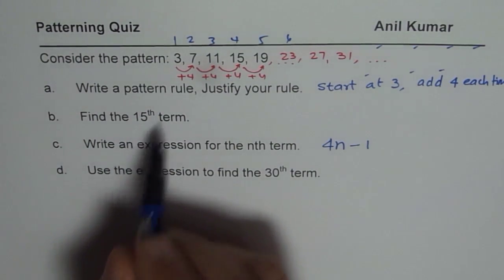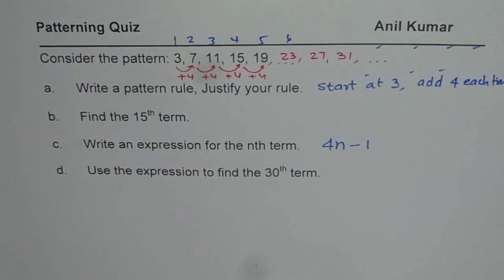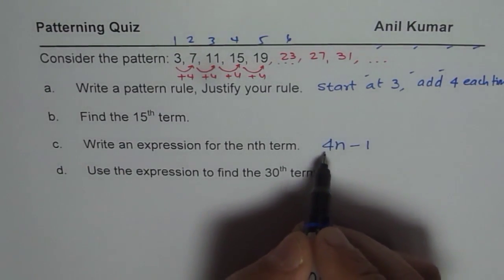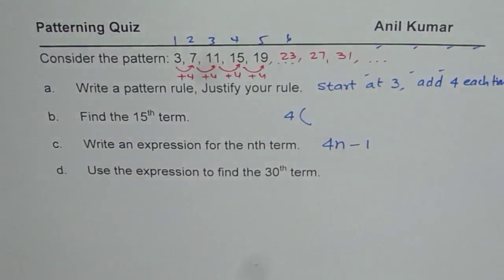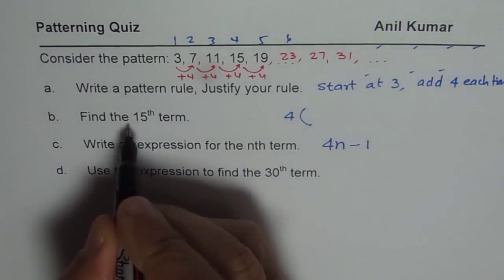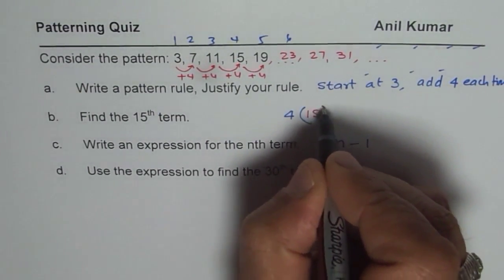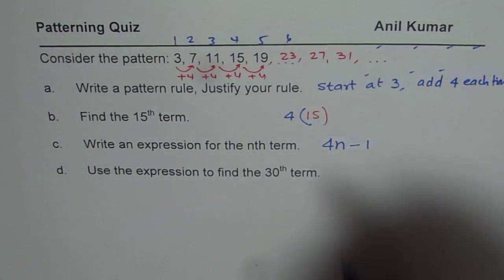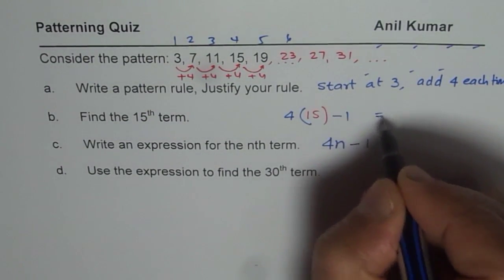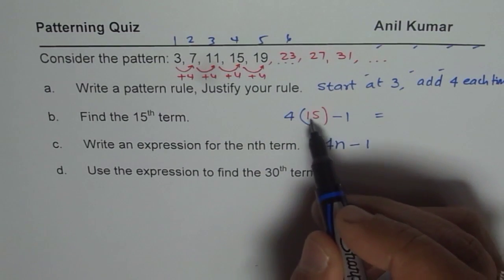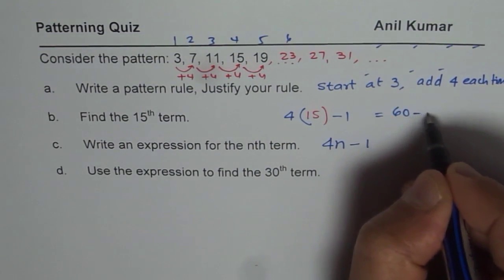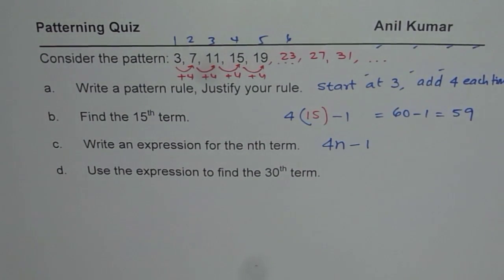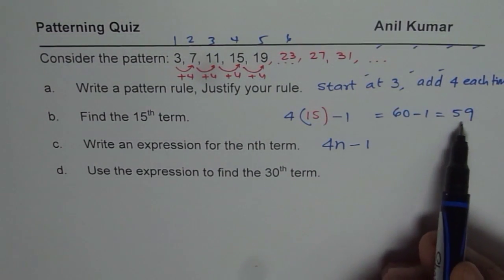Now, we will use this to find the 15th term. How do we find 15th term? For 15th term, we write 4 and within brackets, always write the value of n. n is 15, so we can write 15 here. And then take away 1. Now, 4 times 15 is what? Twice 15 is 30, double it 60. We get 60 minus 1 as 59. So, the 15th term should be 59.